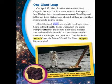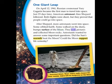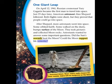After Shepard, more astronauts went into space. Some orbited Earth. Some walked on the dusty, bumpy surface of the moon. They took pictures and collected moon rocks. Astronauts wanted to answer some important questions: Did the sun's warmth heat the moon? Could the moon support life someday?